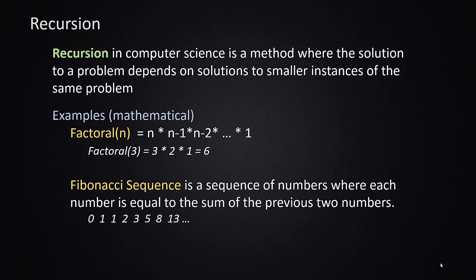An example of something that can be defined recursively — at least for mathematics there are a couple of good simple examples. One is the process called factorial. If you take the factorial of n, it's n times n minus 1 times n minus 2, et cetera. If I think of factorial of n, it's n times factorial of n minus 1, which is n times n minus 1 times factorial of n minus 2, all the way down. So it's a recursive function — the factorial of a larger number is the larger number times the factorial of 1 less.